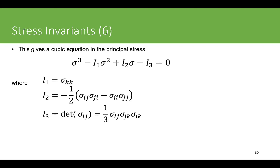Expanding the determinant gives a cubic equation in the principal stress. The coefficients I1, I2, and I3 are defined as follows: I1 = sigma_kk (repeated index, so I1 = sigma_11 + sigma_22 + sigma_33); I2 = minus one-half times (sigma_ij * sigma_ji minus sigma_ii * sigma_jj), where both i and j vary from 1 to 3 covering all combinations; and I3 is the determinant of sigma_ij.